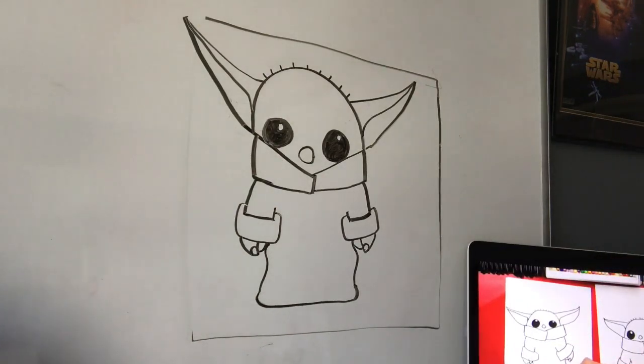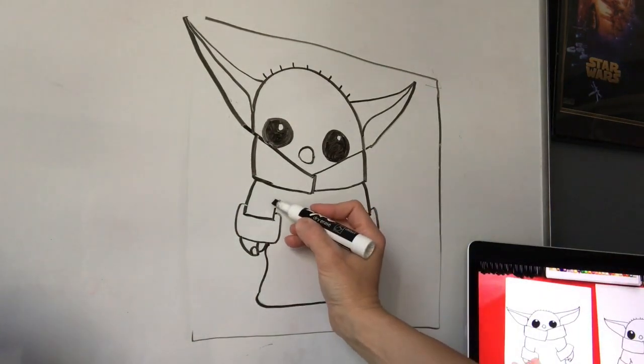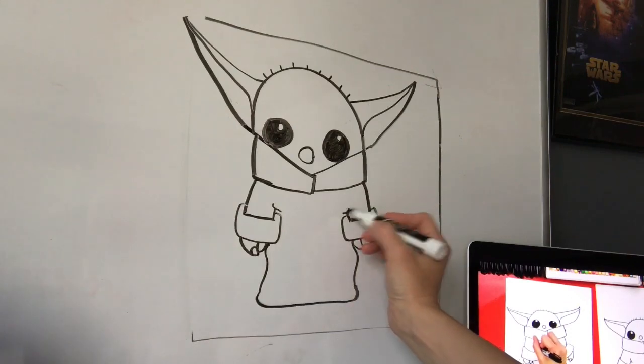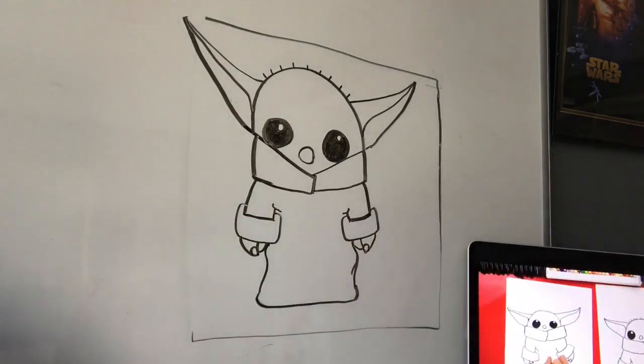That's his robe. And you can add in little squiggly lines here to kind of make little wrinkles. And you're done.